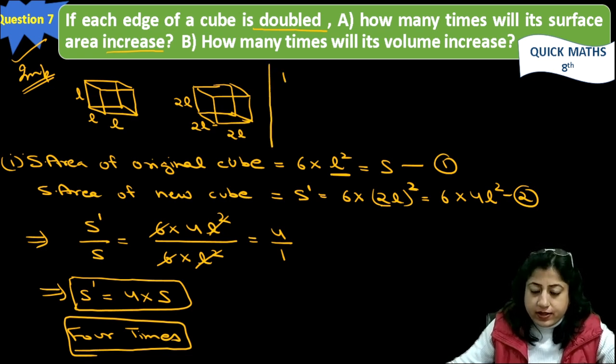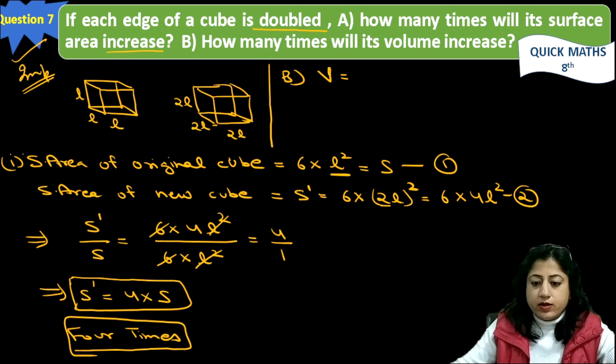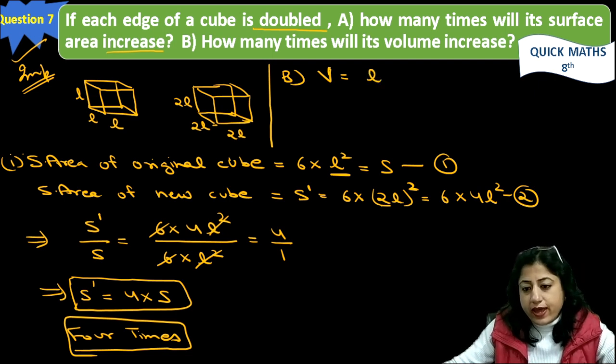Second part is B part, is about the volume. Now suppose V is the volume of original. Original volume is L cube, the volume of cube is L cube.